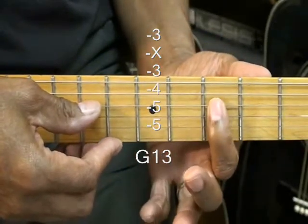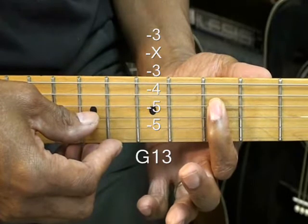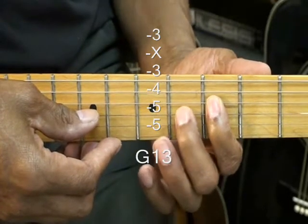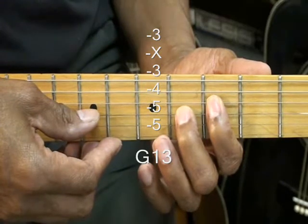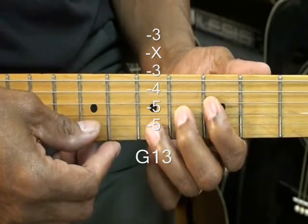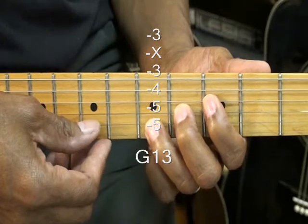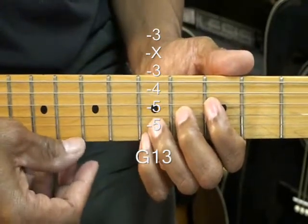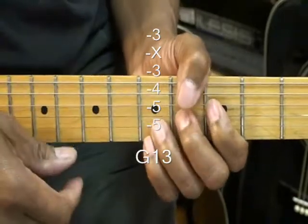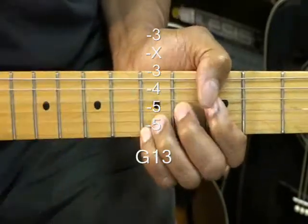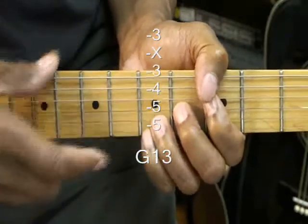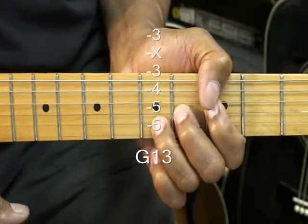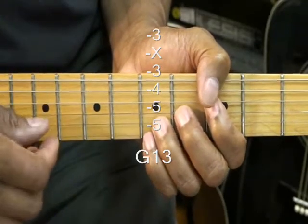So we've got the 1st finger on the D string, 3rd fret, middle finger, G string, 4th fret, ring finger, B string, 5th fret. And I can throw that one in there if we need it, but we can get away with that just by not playing that string and muting it. But if you hold it down it's okay too. You can let it go like that and you can still get that 13th.